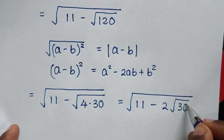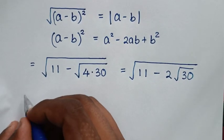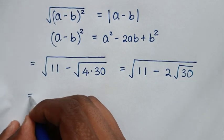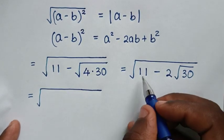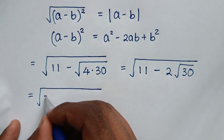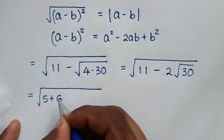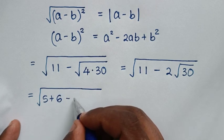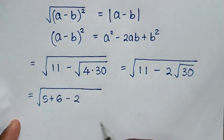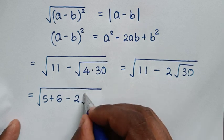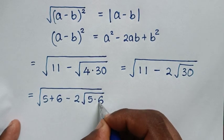In the next step, we note that 11 is the same as 5 + 6, and √30 is the same as √(5 × 6), so the expression becomes √(5 + 6 - 2√5·√6).